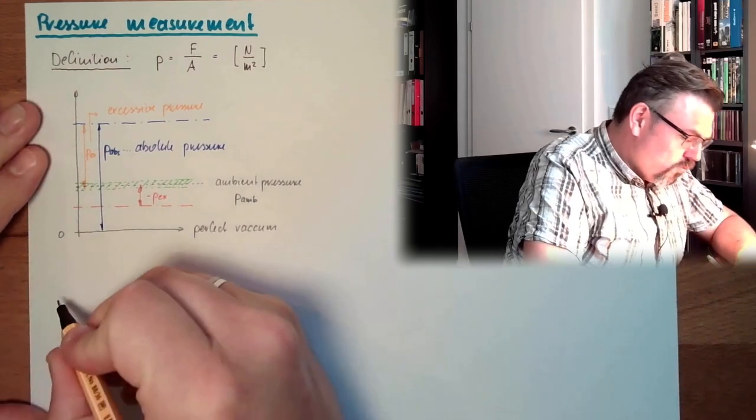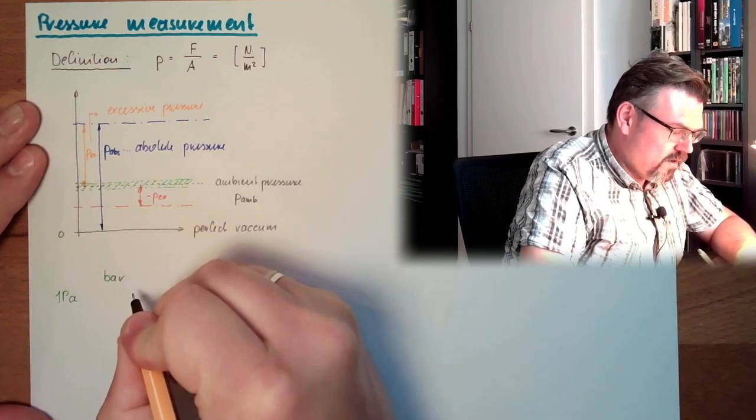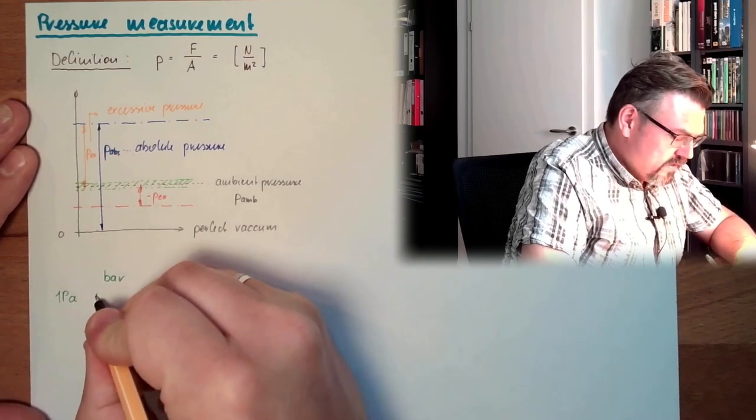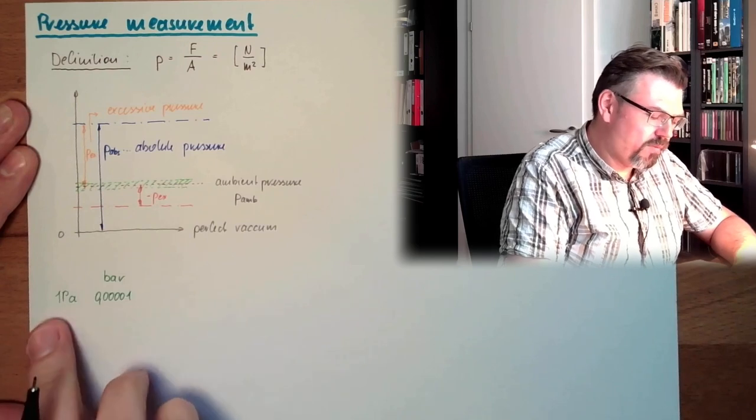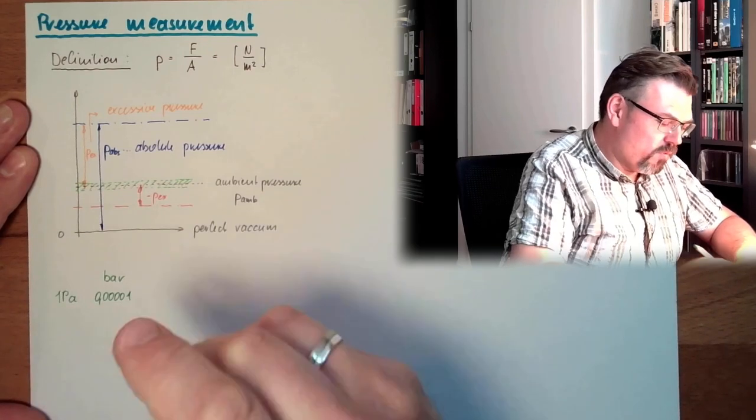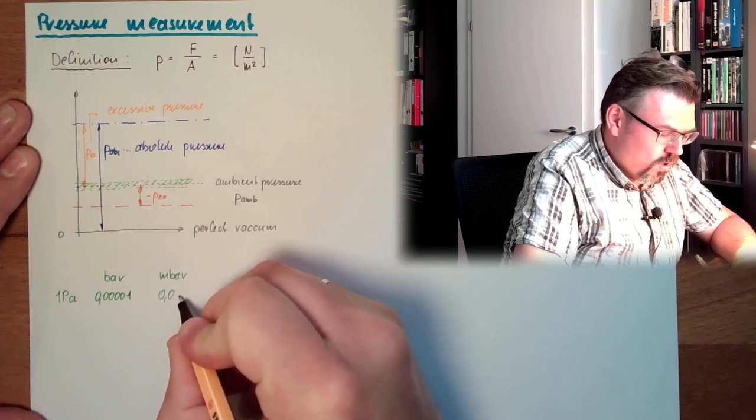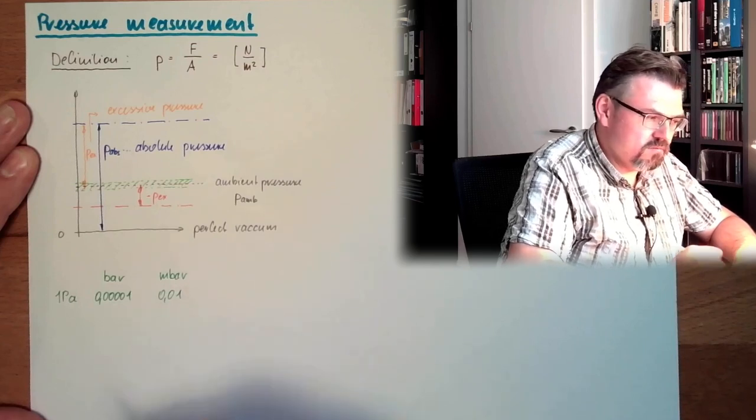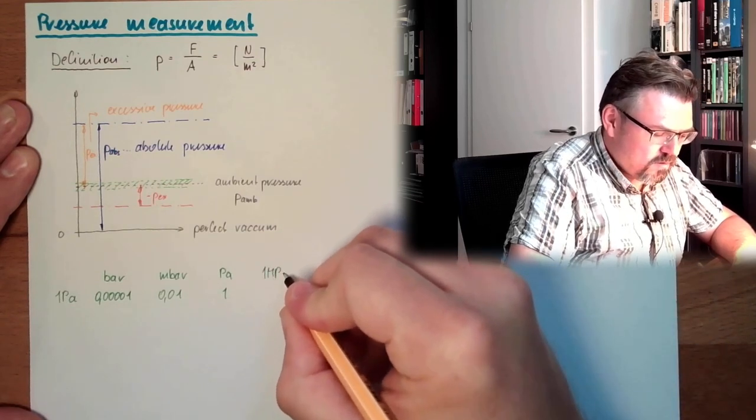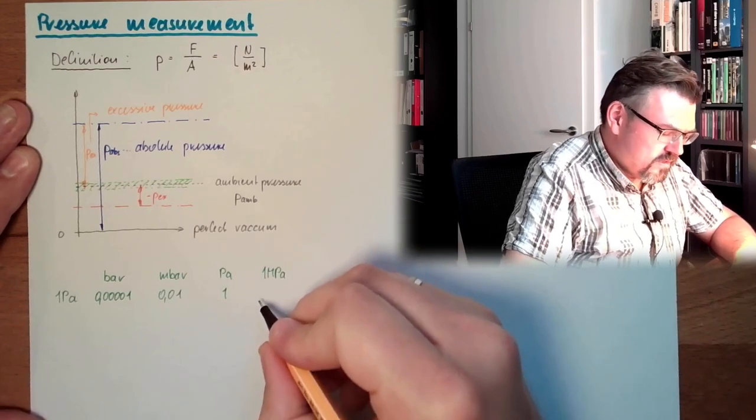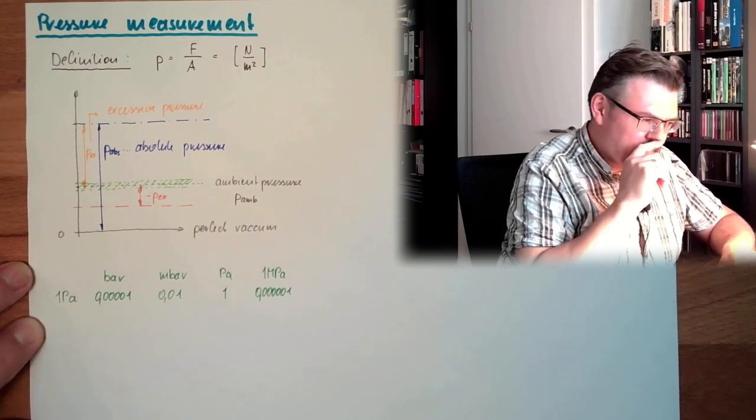So we have 1 Pascal. And here, if we want to measure this in bar, we have 0.00001. That's the factor. 1 Pascal is 0.00001 bar. What is this in millibar? 0.01. Three zeros less, of course. In Pascal, of course, it's 1. 1 Pascal is 1 Pascal, right? Then there is 1 megapascal, Newton per square millimeter, this is. This is 0.000001. Six zeros.